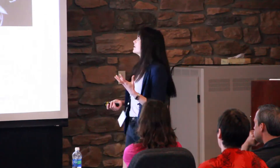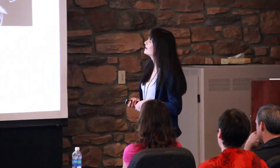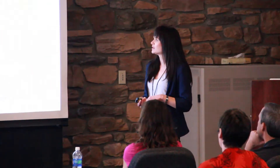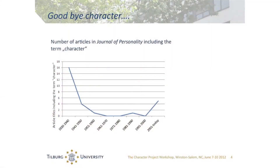I was curious about the impact of Gordon Allport's statement at that time, and I took a look at the issues of one of our flagship journals, the Journal of Personality, looking for articles that included the term 'character' in their title. The consequences of Allport's statement are quite obvious — there were even about 20 years in which not a single paper appeared with 'character' in the title. But looking at the last 12 years, there seems to be a comeback.